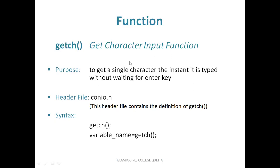The fourth function is getch — get character. It is also an input function used for taking input, but it takes only a character. It gets a single character the instant it is typed, without waiting for the enter key, unlike scanf which waits for the enter key. It is also present in conio.h, so you have to include that header file. Its syntax is getch() with a semicolon, or you can store the value into a variable name — it is used in both formats.